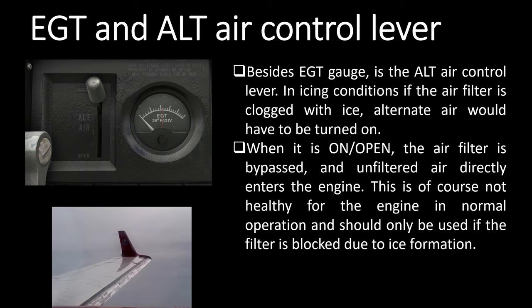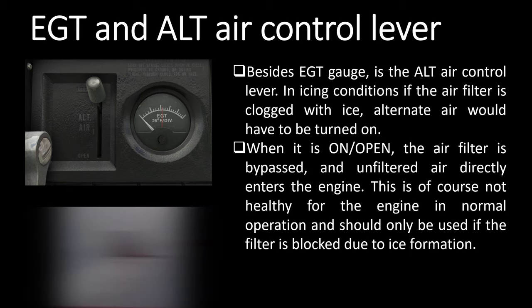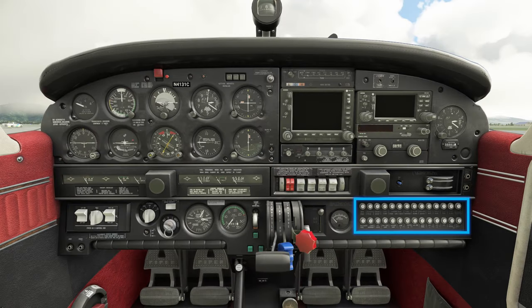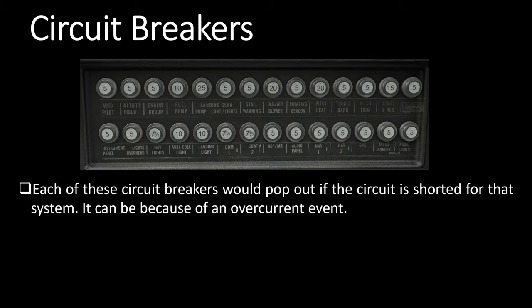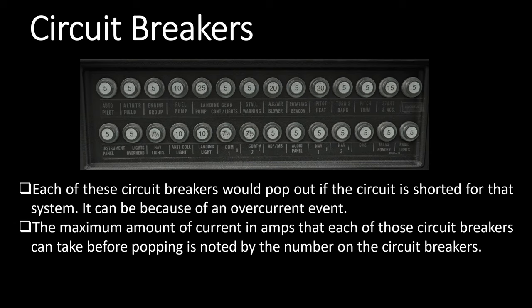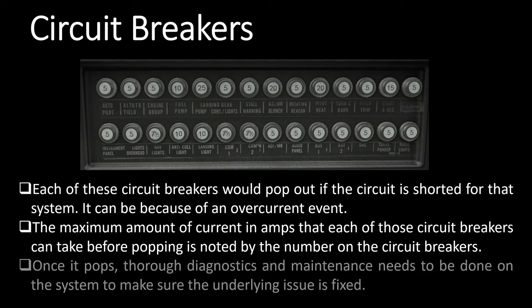A good sign to look for to turn alternate air on is icing on the leading edge of the wings. Going to the right, there is the circuit breaker panel, which we talked about in the electrical systems episode in detail. Briefly, each of these would pop out if the circuit is shorted for that system, due to an overcurrent event. The maximum current in amps that each circuit breaker can take before popping is noted by the number on it. Once it pops, thorough diagnostics and maintenance needs to be done on that system before pushing the circuit breaker back in.